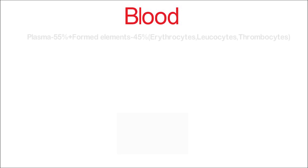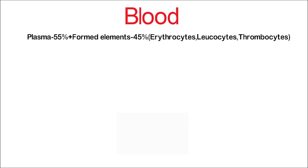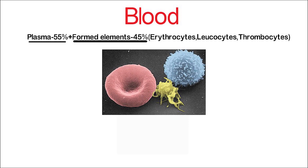Blood is the fluid connective tissue. It is composed of plasma and formed elements. Plasma is the fluid part that constitutes 55%, and formed elements are the cellular elements at 45%, which includes erythrocytes (RBC), leukocytes (WBC), and thrombocytes (platelets).